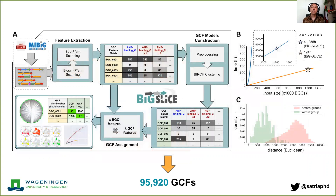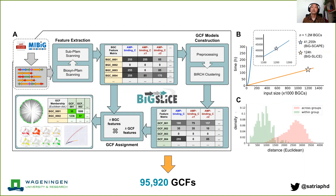In order to chart this biosynthetic diversity, we perform large-scale homology analysis — we group all similar BGCs into what we call gene cluster families, or GCFs — and we do this using our newly developed tool called BiG-SLiCE. You can check out my other presentation in the microbial ecology session for technical details on BiG-SLiCE. We end up with a total of 95,000 GCFs from those BGCs using the default parameters.